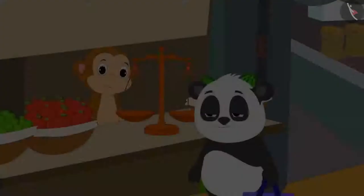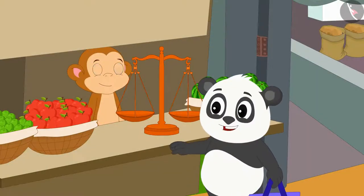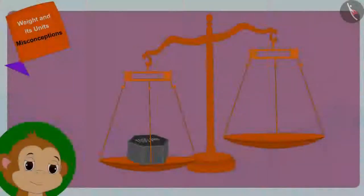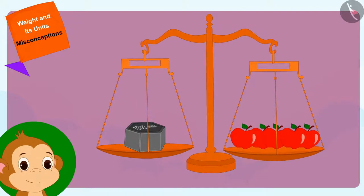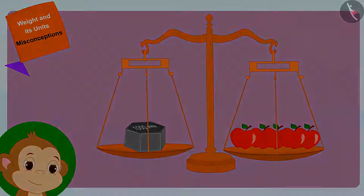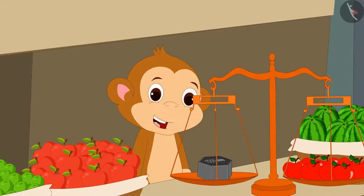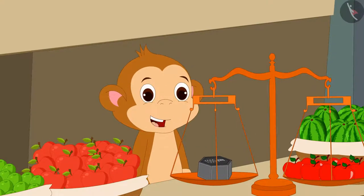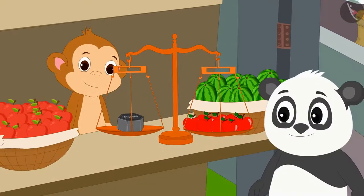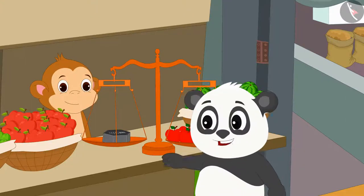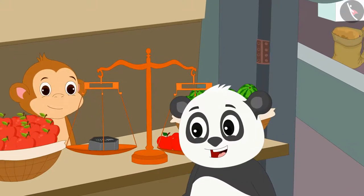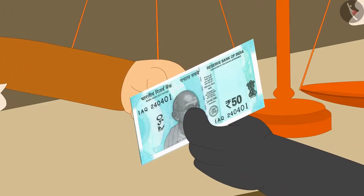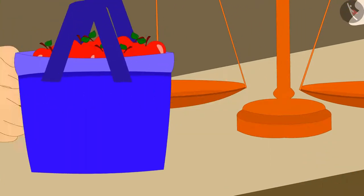First he went to Babban's fruit stall. 'Babban, give me apples for 50 rupees please,' Golu said to Babban. Babban placed some apples on his weighing scale. 'Golu, you will get 1000 grams apples for 50 rupees,' Babban told Golu.